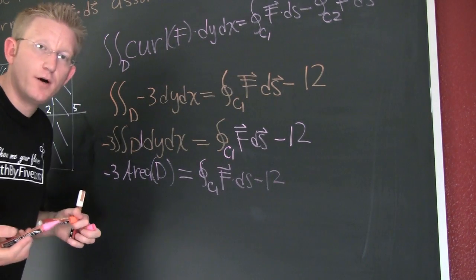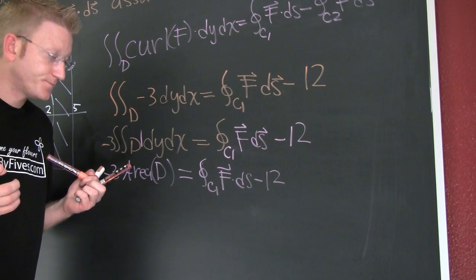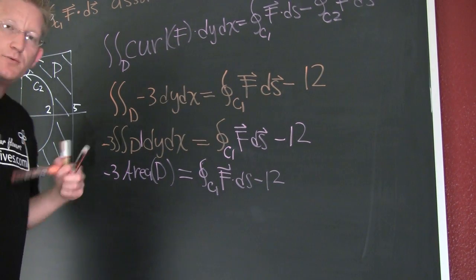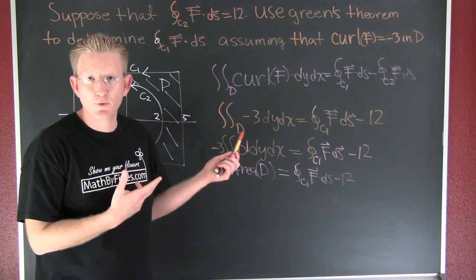And then that's going to be the integral around C1 FDX minus 12. So now we're almost done. We just need to know the area of D. We should see the big picture here.